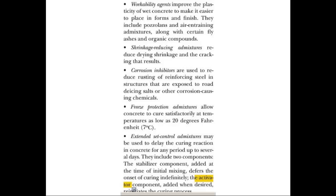Workability agents improve the plasticity of wet cement. Shrinkage-reducing admixtures are also available, as are corrosion inhibitors to make sure any steel inside doesn't corrode — corrosion causes concrete to fall apart, as seen in bridges and bridge abutments. Freeze-protection admixtures allow concrete to cure satisfactorily at temperatures as low as 20 degrees Fahrenheit. Most times we will just cover it with a blanket or hay bales. Extended set control admixtures may delay the curing reaction for up to several days.